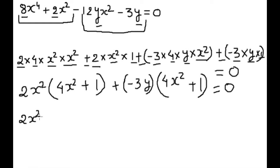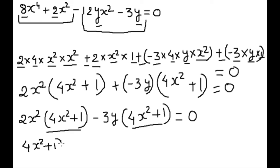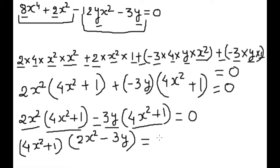We now see that 4x squared plus 1 is a common factor in both groups. So we put the common term out: 4x squared plus 1, and the remaining bracket is 2x squared minus 3y, equal to 0. This is the complete group factorization of this polynomial function.